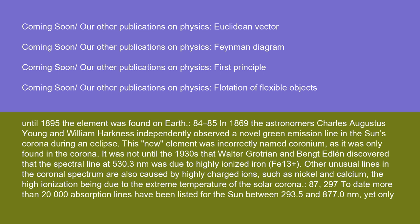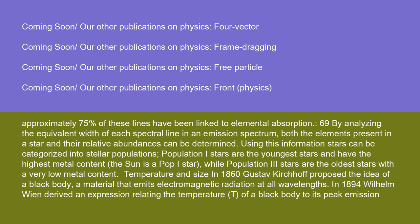To date, more than 20,000 absorption lines have been listed for the Sun between 293.5 and 877.0 nanometers, yet only approximately 75% of these lines have been linked to elemental absorption. By analyzing the equivalent width of each spectral line in an emission spectrum, both the elements present in a star and their relative abundances can be determined. Using this information, stars can be categorized into stellar populations. Population 1 stars are the youngest and have the highest metal content, while Population 3 stars are the oldest with a very low metal content.